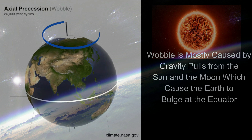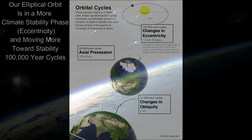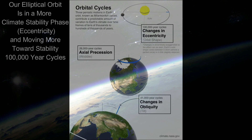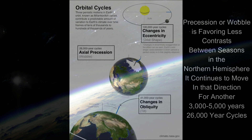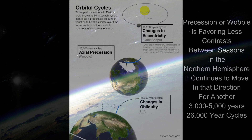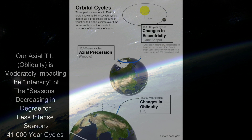Wobble is mostly caused by gravity pulls from the Sun and the Moon, which cause the Earth to bulge at the equator. Our elliptical orbit is in a more climate-stable phase in terms of eccentricity, moving toward stability in 100,000-year cycles. Precession or wobble is favoring less contrast between seasons in the Northern Hemisphere, continuing in that direction for another 3,000 to 5,000 years in 26,000-year cycles. Our axial tilt or obliquity is moderately impacting the intensity of the seasons, decreasing in degree for less intense seasons in 41,000-year cycles.